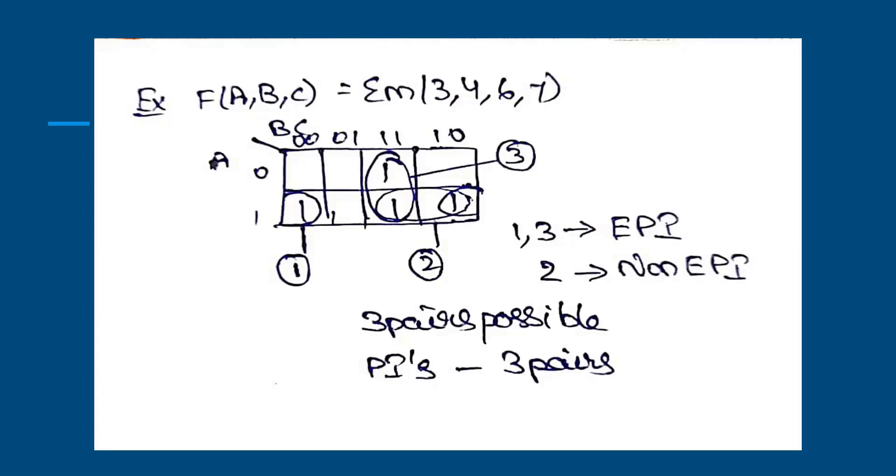So we have discussed number system and their conversions, K-map for 3 variables and 4 variables, and what are the implicants, prime implicants, and essential prime implicants.